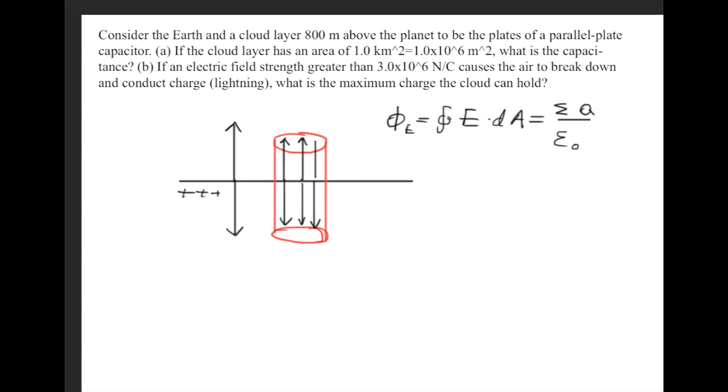So if we continue solving using Gauss' law, we get E times A is equal to the sum of the enclosed charge over epsilon naught.